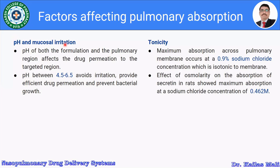Tonicity is yet another factor. Maximum absorption across the pulmonary membrane occurs at 0.9% sodium chloride concentration, which is isotonic to the membrane. A study on the effect of osmolarity on the absorption of secretin in rats showed maximum absorption at a sodium chloride concentration of 0.462 mol.